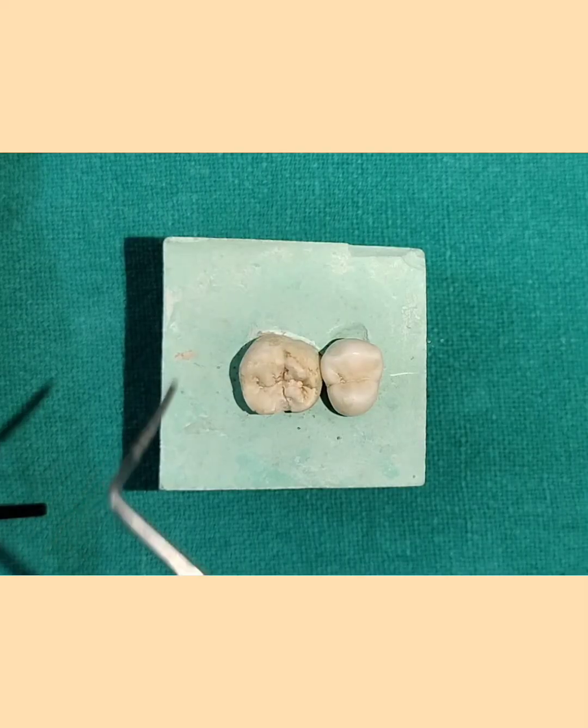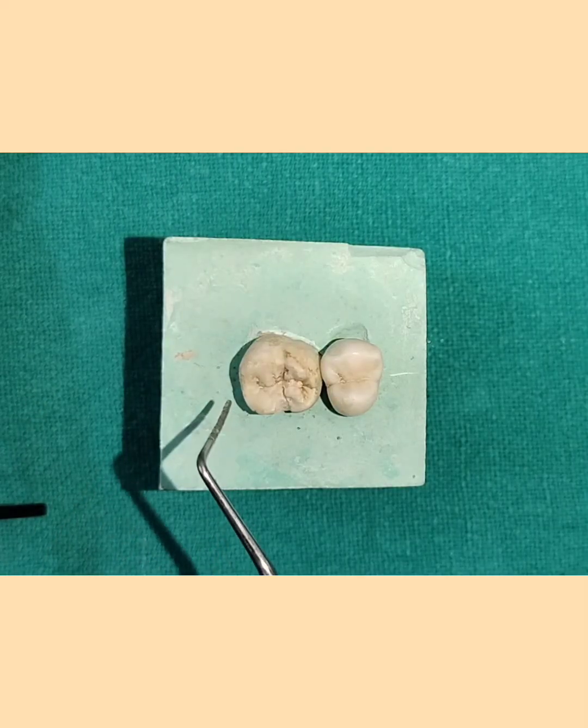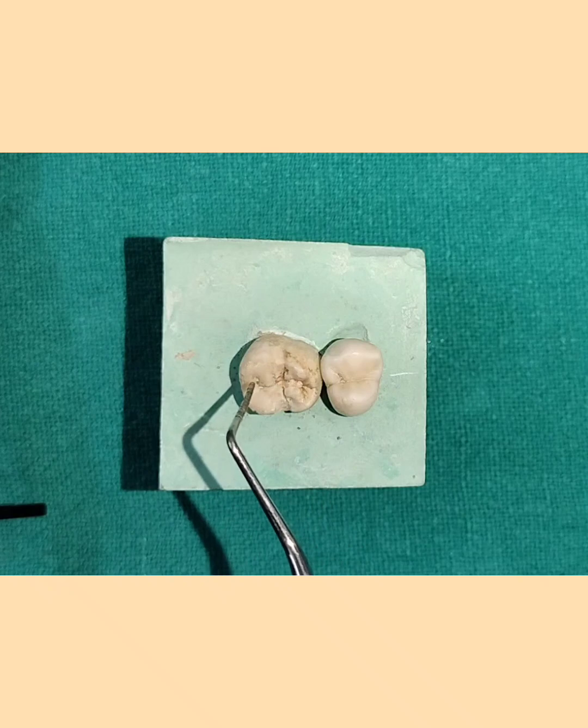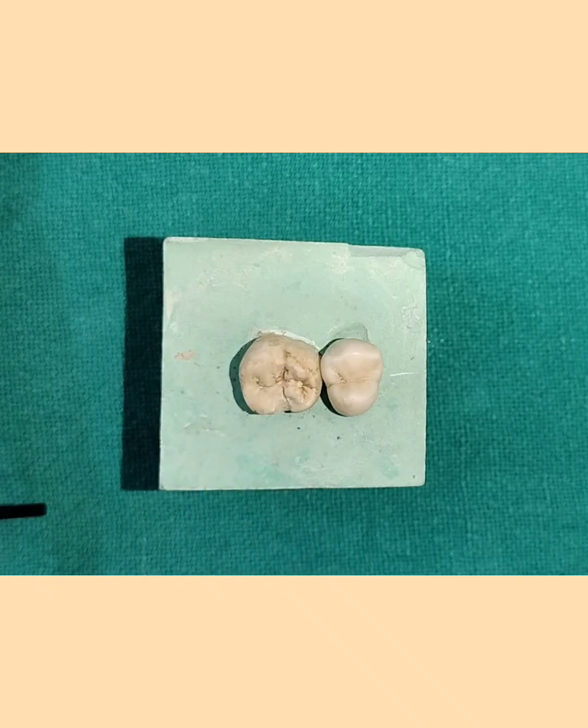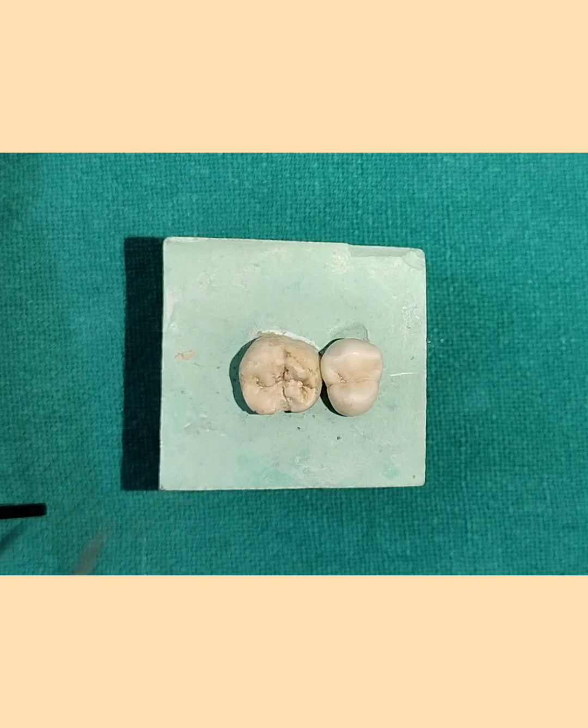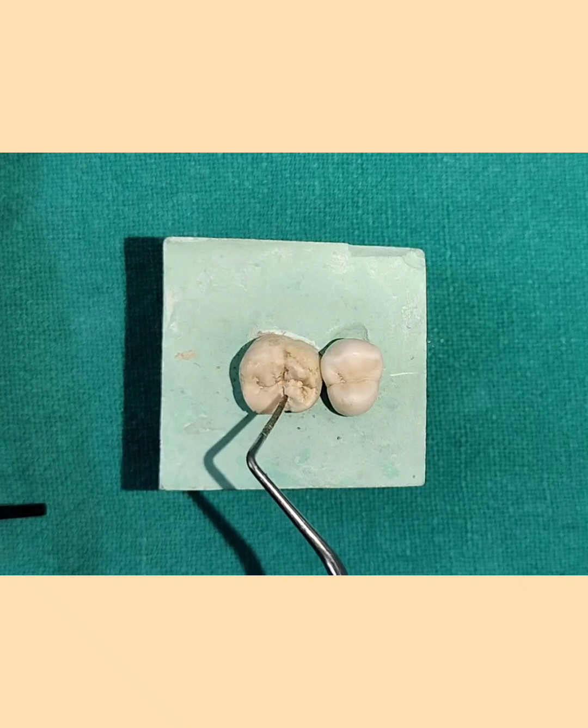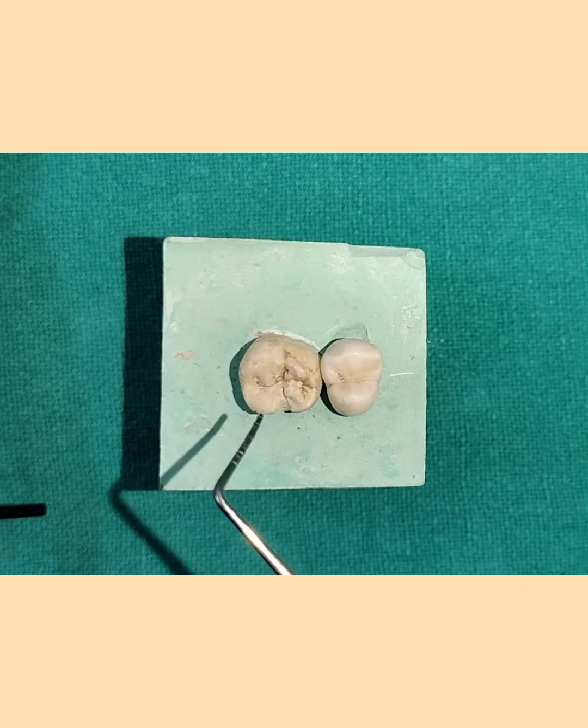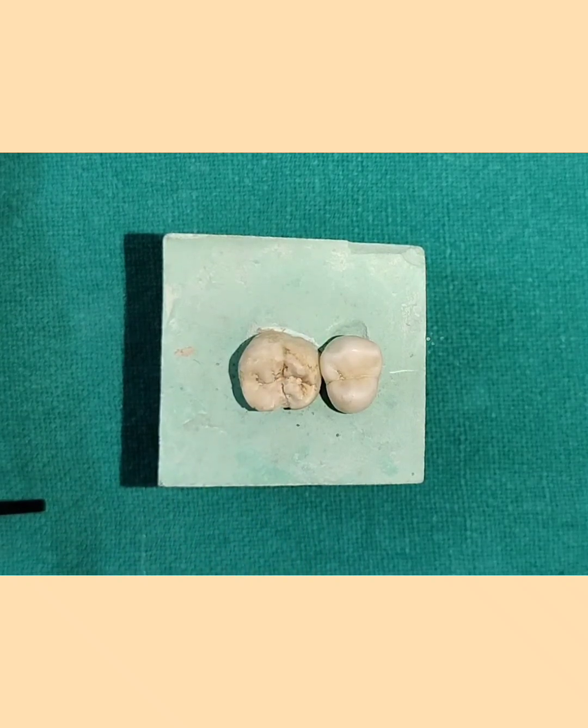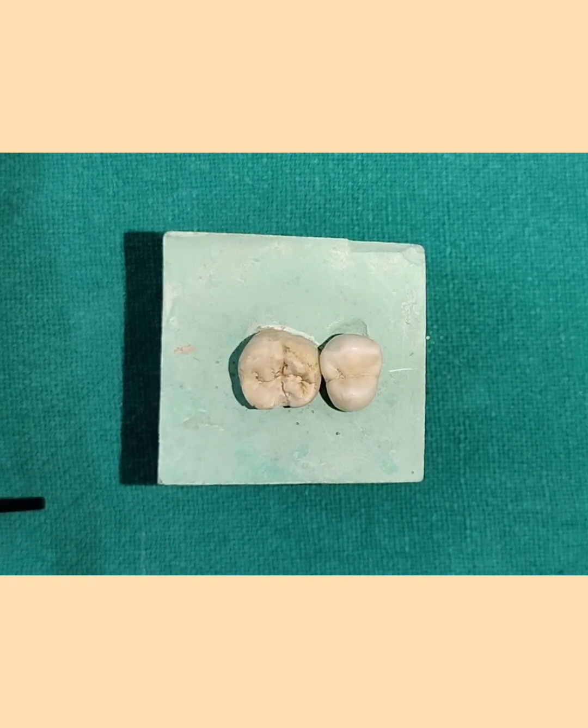So first procedure is to clean the pits and fissures. You can see these are pits and fissures. You have to clean it properly with pumice paste or you can use air abrasion and then once you have done that check it with an explorer to see if there is any food debris which is there. Then rinse it properly for 20 seconds.